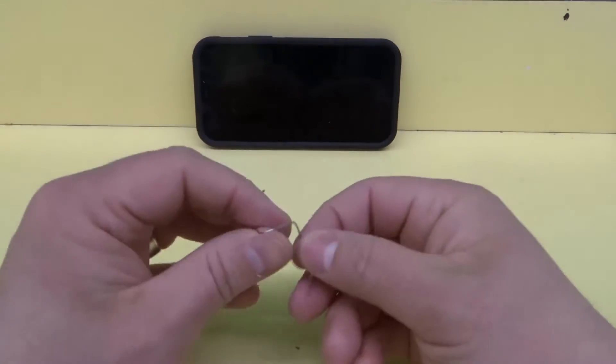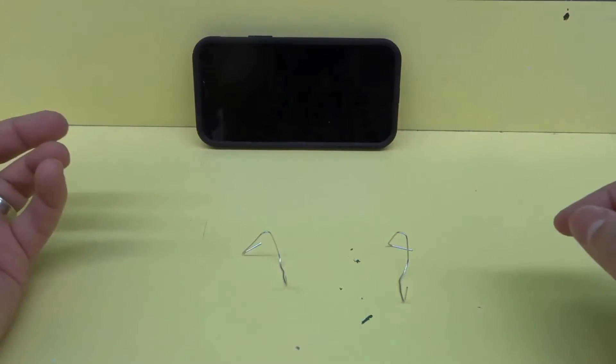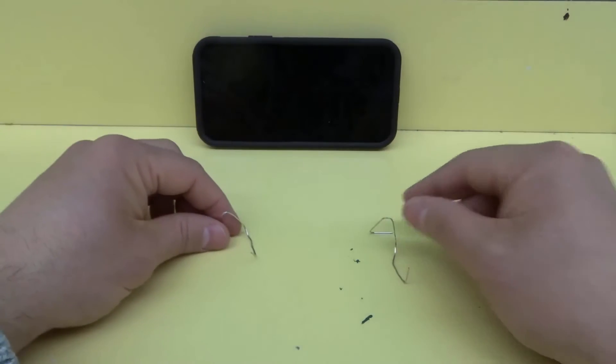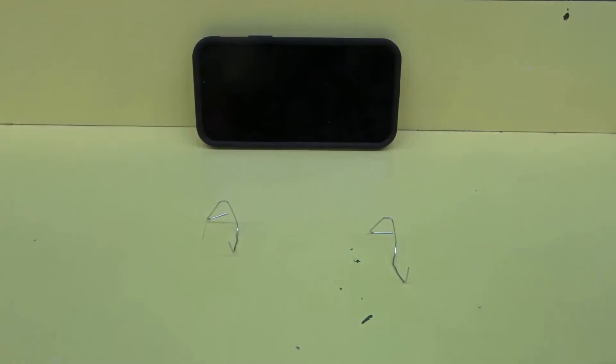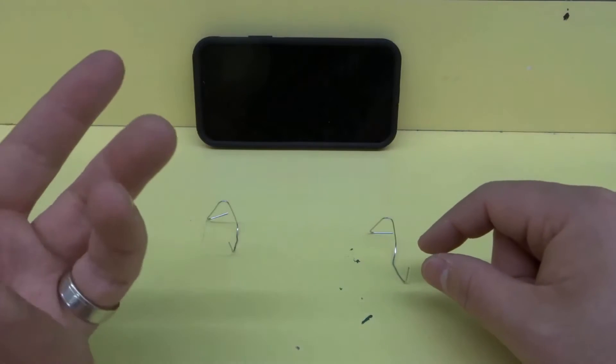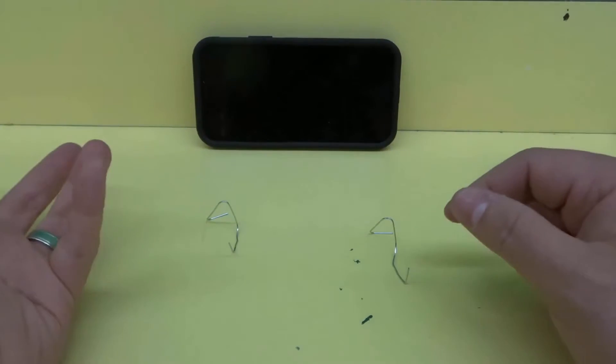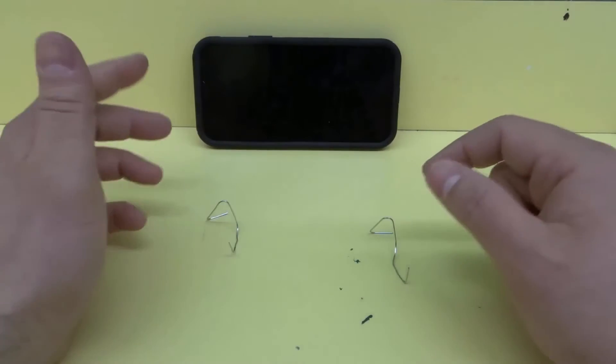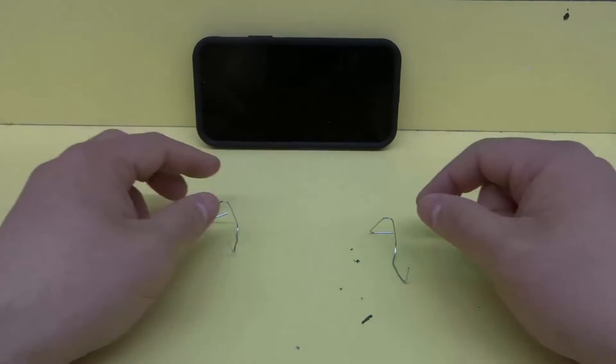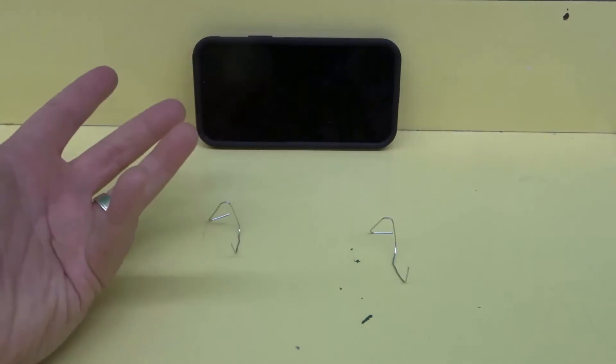As you can see right here, I've essentially taken paperclips and bent them into a holding position. It works really well because you can use these for a long time—they tend to last without breaking or bending. So you can use this instead of buying a phone stand.